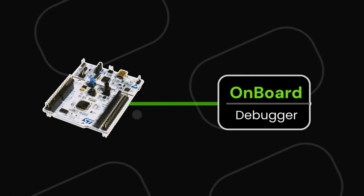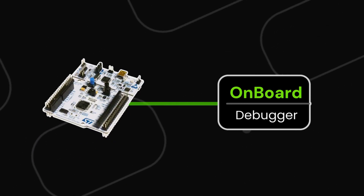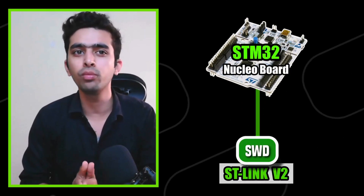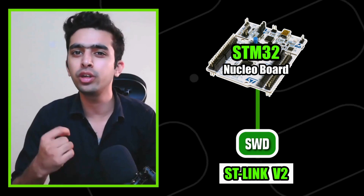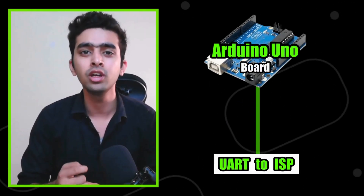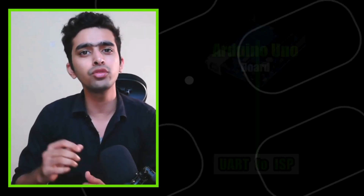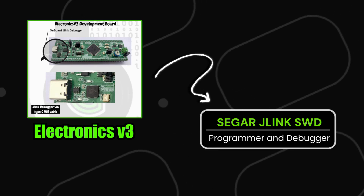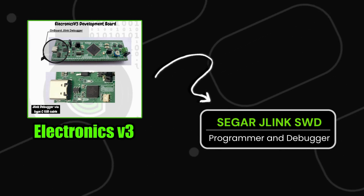On some development boards, there is an onboard debugger or programmer circuit of either JTAG, SWD, or ISP-based tools, so we just need to connect these development or evaluation boards to the host PC via a Type-C USB cable. For example, the STM32 Nucleo board has an onboard SWD protocol-based ST-Link V2 debugger, and Arduino UNO boards have UART ISP-based programmers on them. Similarly, the Likronics version 3 evaluation board has an onboard SEGGER J-Link SWD programmer and debugger.